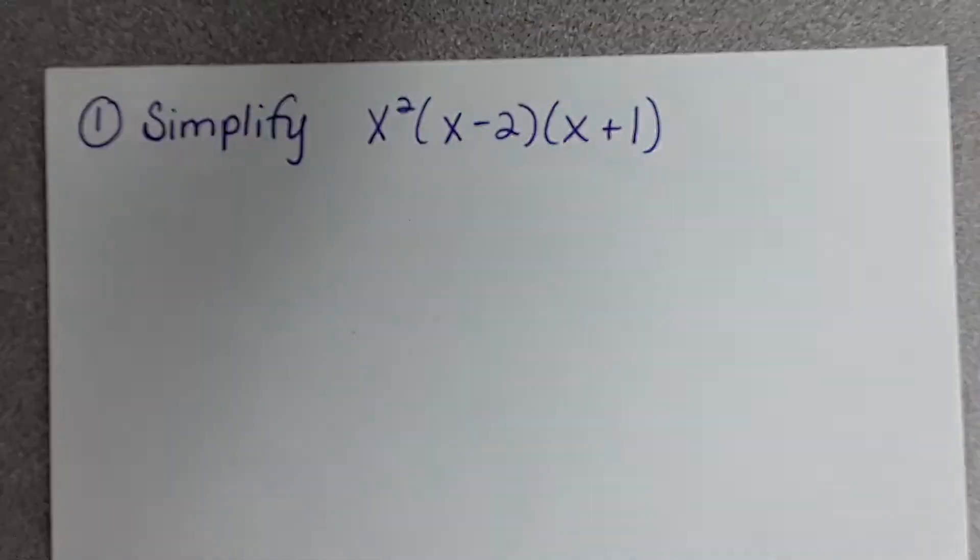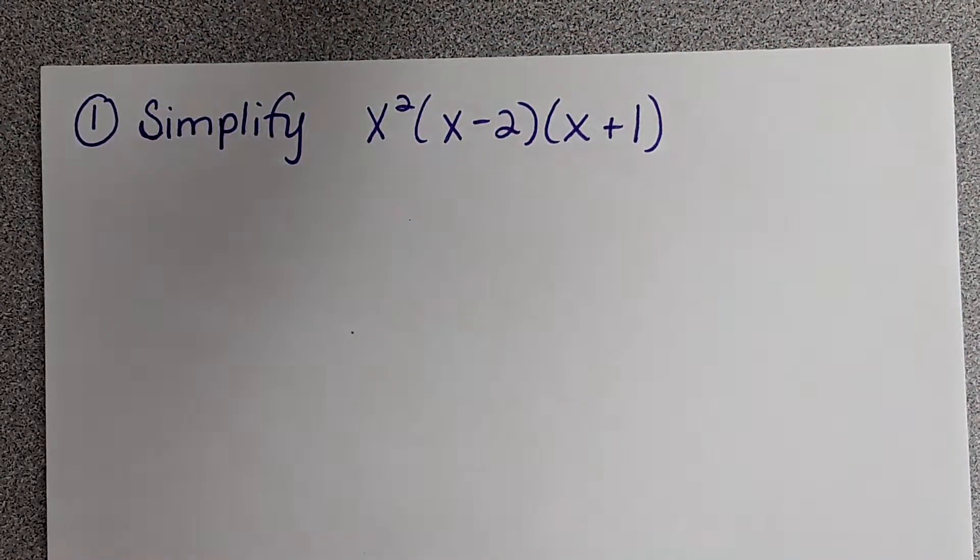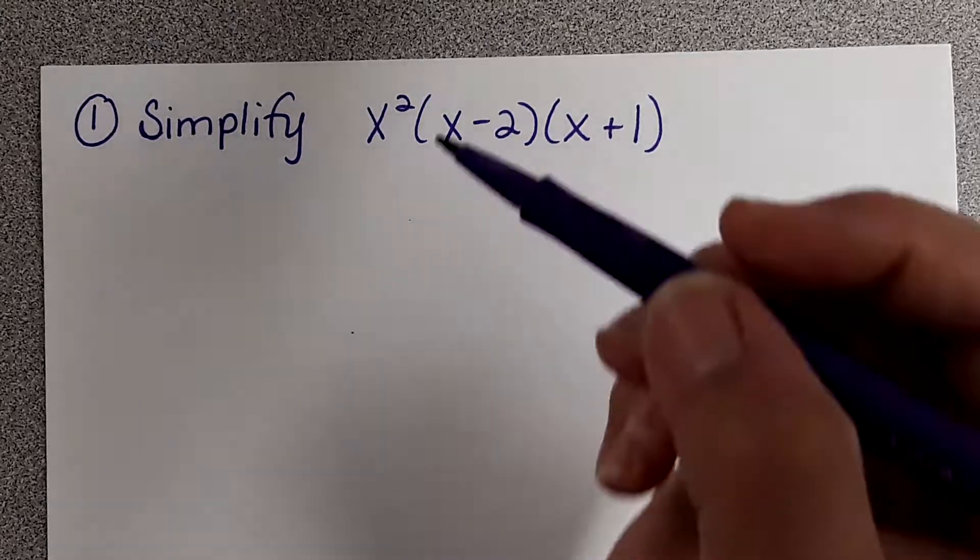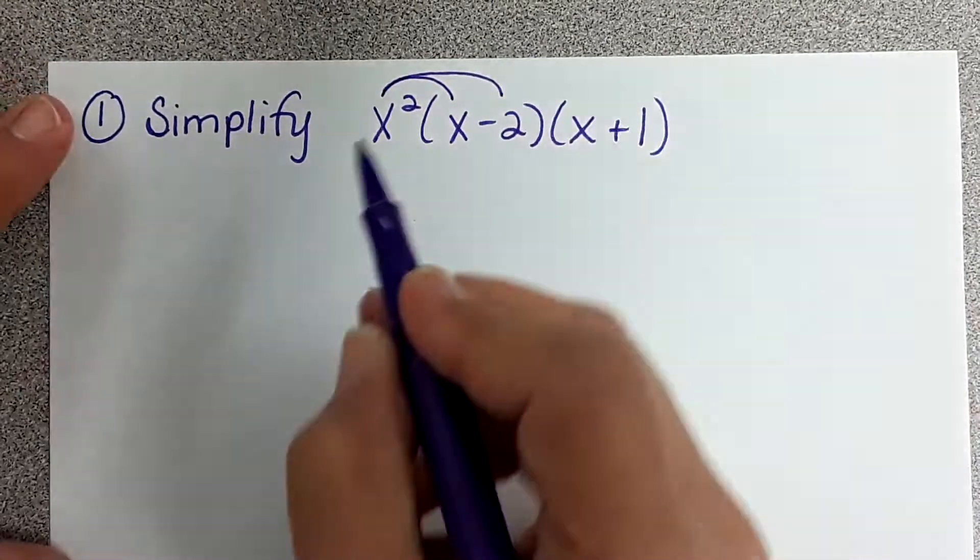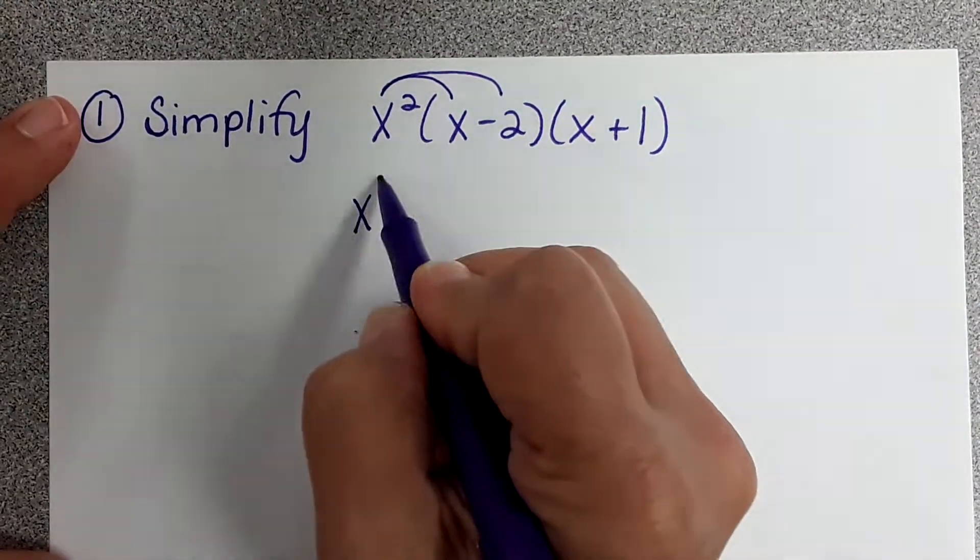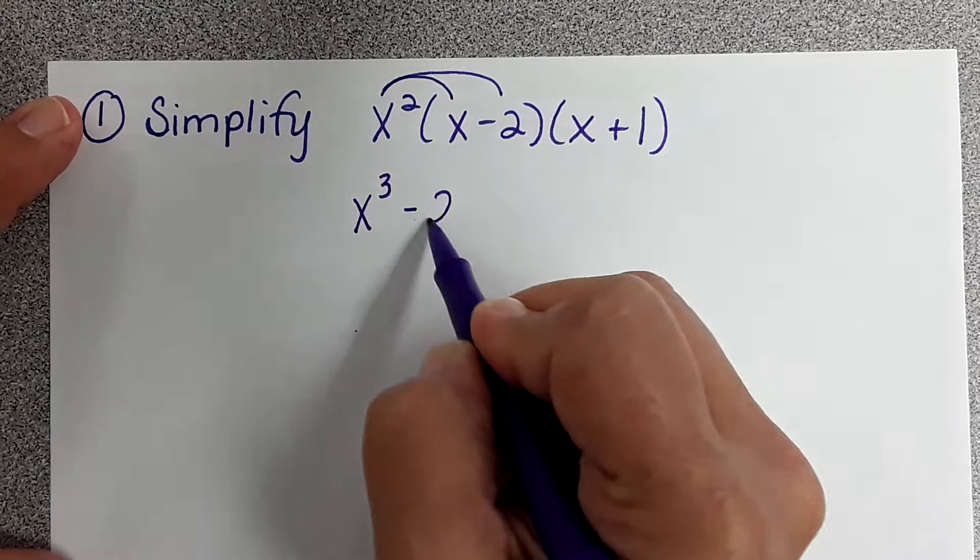It's just a matter, you're going to have to FOIL sometime. It's just a matter when you want to FOIL. So I'll do this first, okay? So that means I'm going to get x to the third minus 2x squared.